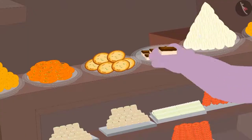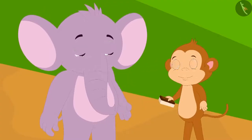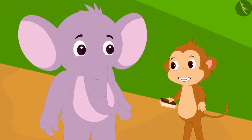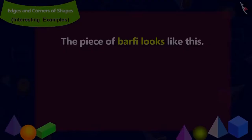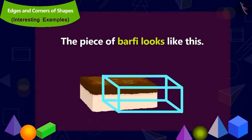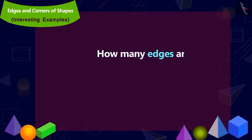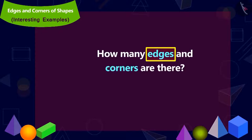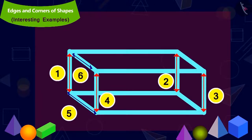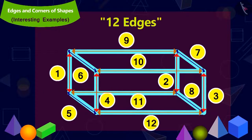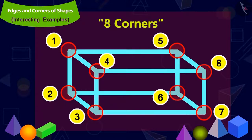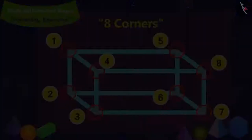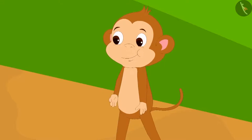Appu first gave Babban a piece of barfi. Babban immediately said: 12 edges and 8 corners. Is Babban's answer correct? This is how the piece of barfi looks — it has 12 edges and 8 corners. Babban's answer is absolutely correct, and he quickly ate the barfi.